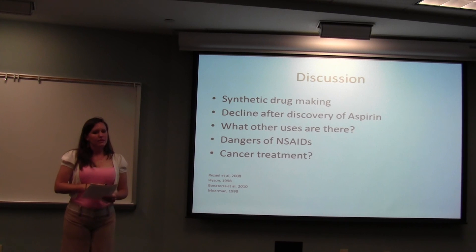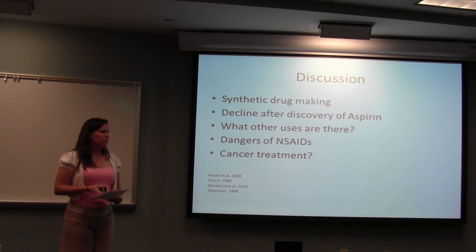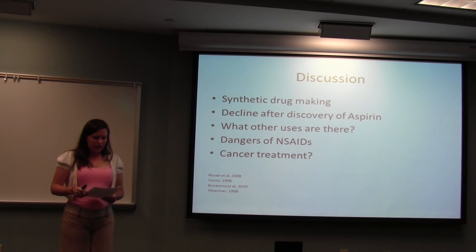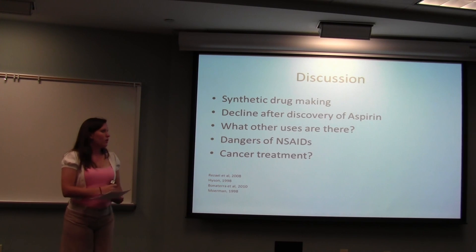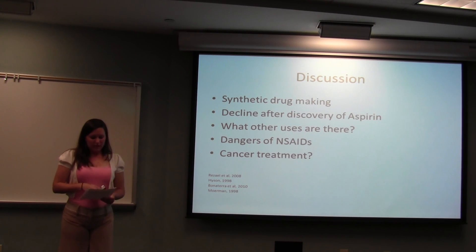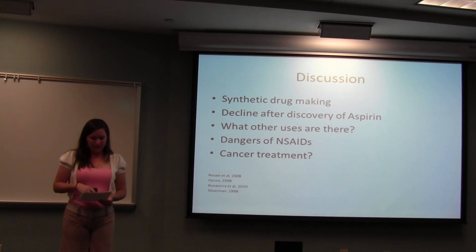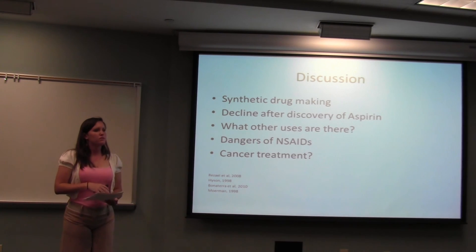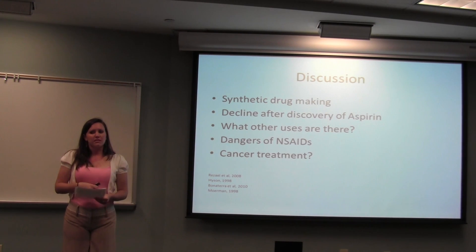The white willow tree was one that led to the first synthetic drug-making — creating salicin in the lab. After the creation of aspirin, there was a decline in research because aspirin was kind of the miracle drug. I think it would be interesting to look at what herbal salicin still does, since it doesn't have as many problems as aspirin does. Further research needs to be done on cancer treatment because it showed pro-apoptotic effects on cancer cells, and I'm wondering what other cancers it could be effective on. It would also be interesting to look at what Native Americans use it for, since they use it for things way different than just pain and inflammation. So, what other uses for salicin are there? Thank you.